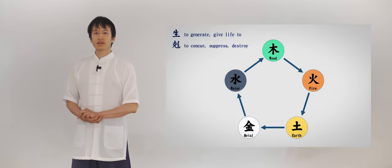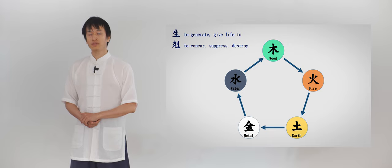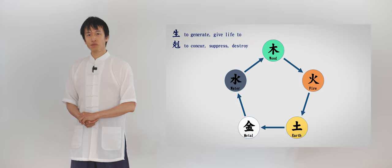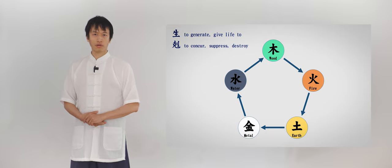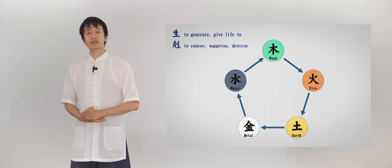First, we look at the generation relations. Starting with probably the more intuitive examples, water would nurture wood and wood would supply fire. Fire will nurture earth and earth generates metal, which you find when you dig into the earth. And then metal gives rise to water. This is the generation cycle.